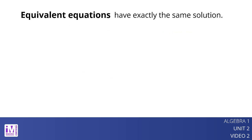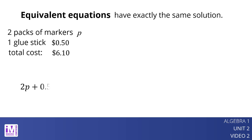Equivalent equations have exactly the same solution. Suppose we bought two packs of markers and a 50-cent glue stick for $6.10. Let's use p to represent the dollar cost of one pack of markers. The equation 2p plus 0.5 equals 6.10 represents this purchase. The solution to this equation is 2.80.